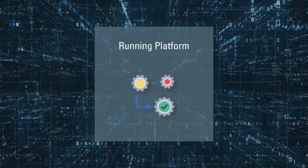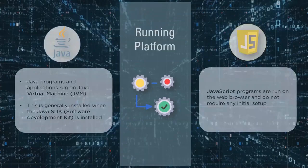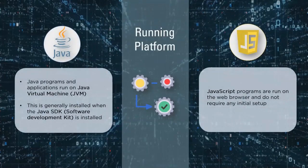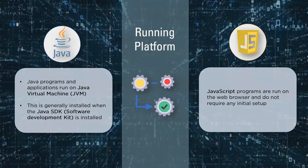The next factor for comparison is the running platform. Java programs and applications run on the Java Virtual Machine, which is generally installed when you install the Java Software Development Kit. This machine provides the platform for executing Java code and interprets the bytecode during execution. JavaScript programs are run on the web browser and do not require any initial setup. All programs written in JavaScript are executed and shown on the web browser — Chrome, Firefox, or any browser.